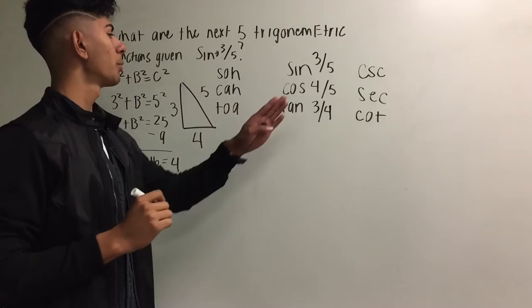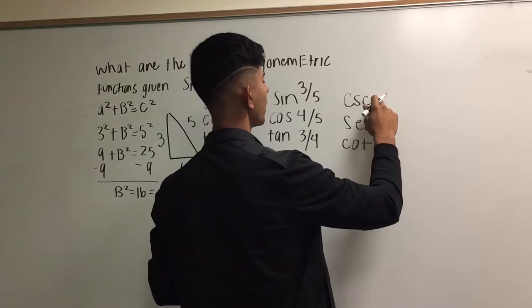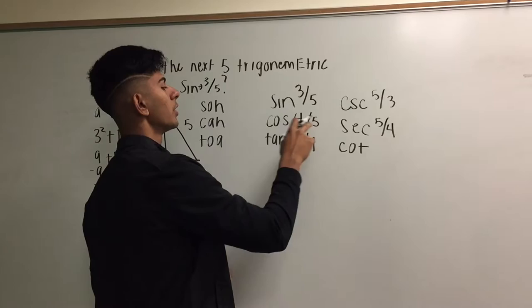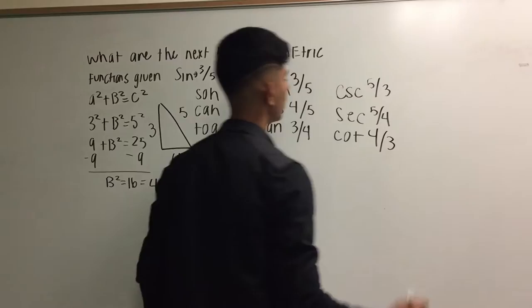Alright, now one thing to remember about these three is that this will always be the exact opposite of this. Always. So, in this case, cosecant would be 5 over 3. Cosine would be 5 over 4 for secant. Secant is the opposite of cosine, so it would be 5 over 4 instead of 4 over 5. And cotangent would be 4 over 3.